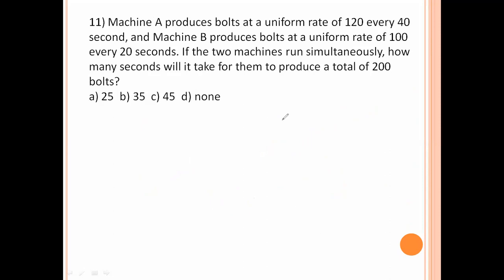Machine A produces bowls at a uniform rate of 120 every 40 seconds. And Machine B produces bowls at a uniform rate of 100 every 20 seconds. If two machines run simultaneously, how many seconds will it take for them to produce a total of 200 bowls? Here first one, in 40 seconds it makes 120. Three for every second. Here 21 into 25, five for every second. Totally, both combinedly they do 8 per second. Here how many they combinedly made? 200 bowls. It takes how much time? 200 by 8. 25 bowls. Option number A is the right answer.